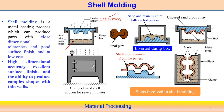After heating the pattern, we invert the dump box so the sand with the resin binder comes in contact with the heated pattern. Once in contact, the binding agent binds the sand elements and creates a certain thickness — a very thin shell. Then we invert the dump box again, and the uncured sand that did not become part of the shell becomes separated.